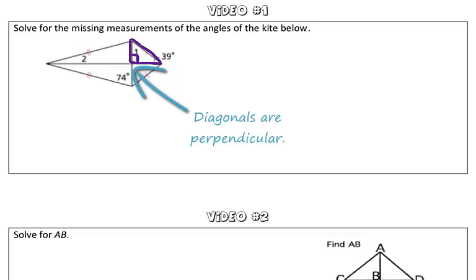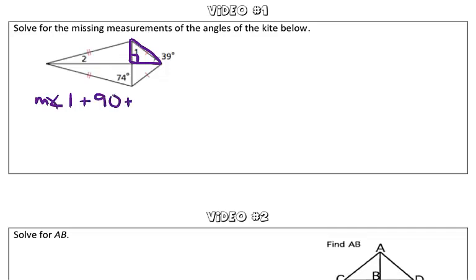So we know two angles of this small triangle, and what we learned previously is that the sum of the interior angles of a triangle is 180 degrees. So the measure of angle 1 plus 90 plus 39 degrees is equal to 180 degrees.